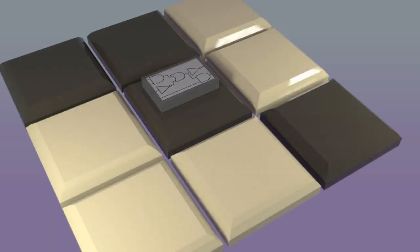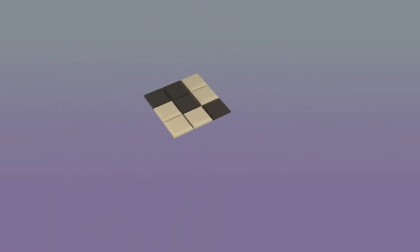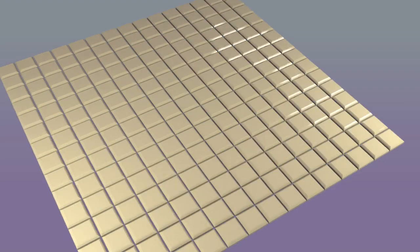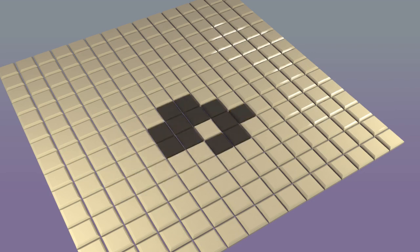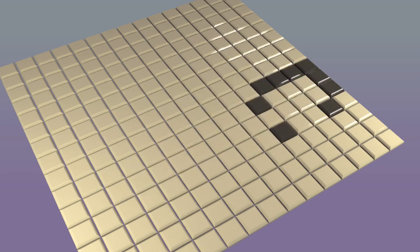Let's return to the tiles and zoom out our view and add more tiles. It turns out that many patterns are stable, and some of them move. This pattern is called a glider. And this one is called a spaceship.